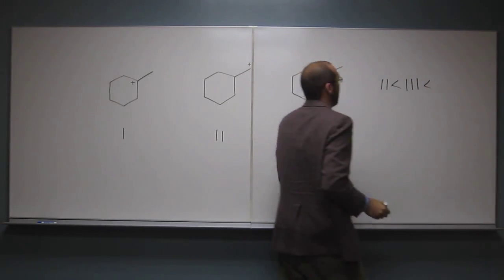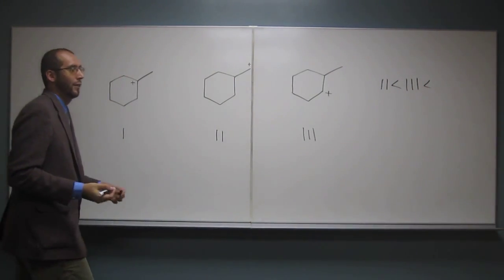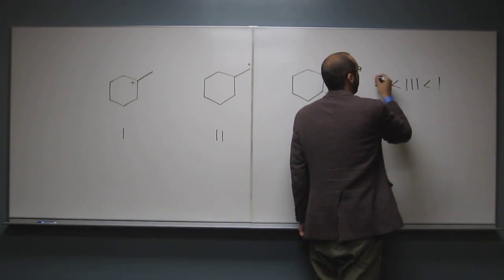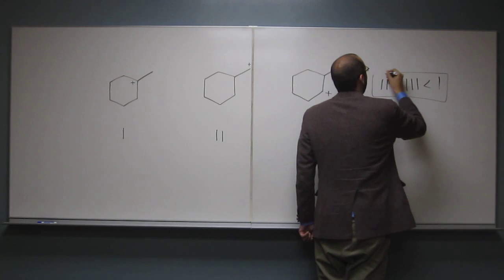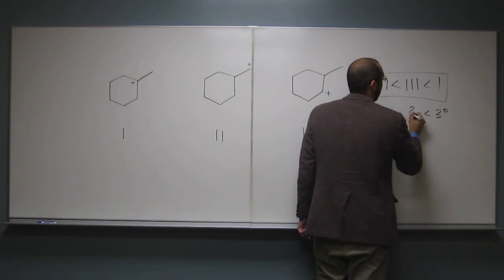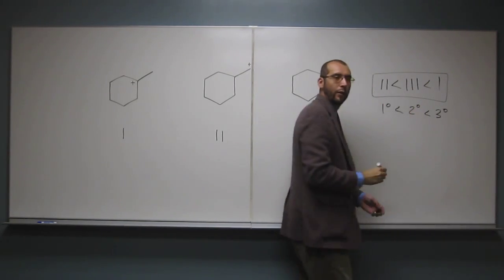And then, what's the most stable? One. Obviously, one, right? There's nothing left. And why is that? Because it's a tertiary. Yeah. So, in other words, tertiaries are more stable than secondaries, which are more stable than primaries.